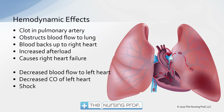This embolus obstructs blood flow — the perfusion — to the lung, not the ventilation. Blood backs up into the right heart, increasing the afterload for the right heart and potentially causing right heart failure. Because less blood gets through the lung to the left side, we see decreased blood flow to the left heart, causing decreased cardiac output and eventually shock.